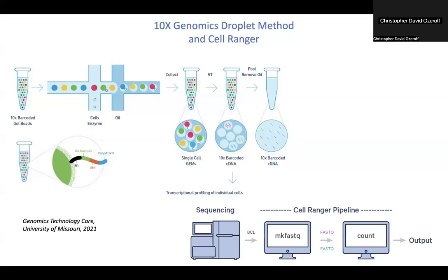It outputs a count matrix that we can then analyze with the R program Seurat. Also, in case you're interested, CellRanger will output a loupe file, which can be viewed on a loupe browser — a desktop application that you can download from 10x Genomics.